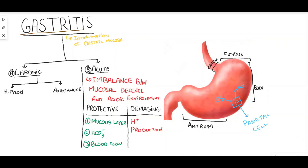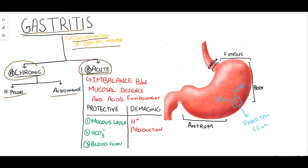Gastritis is basically the inflammation of the gastric mucosa. Gastritis is simply divided into two types: chronic gastritis, which is further subdivided into two types - H. pylori and autoimmune gastritis - and acute gastritis.